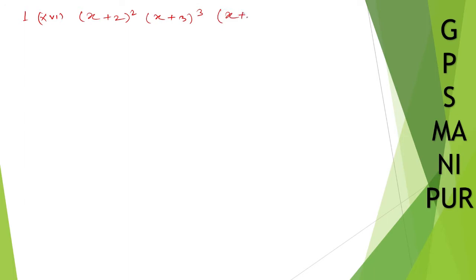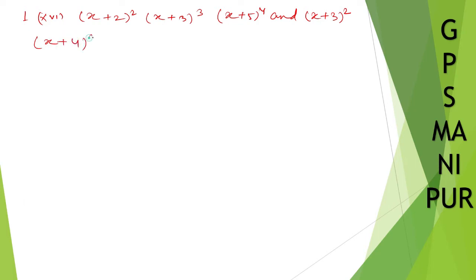And the second polynomial is: (x plus 3) whole square, (x plus 4) whole cube, and (x plus 5).